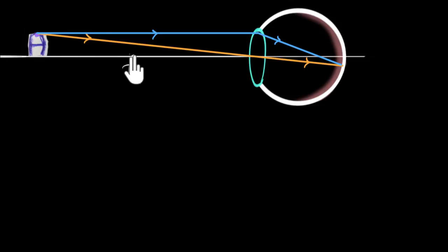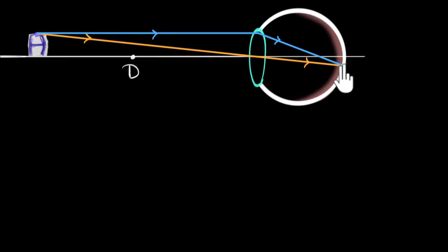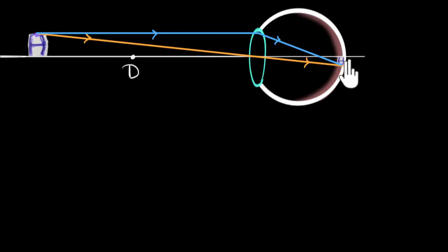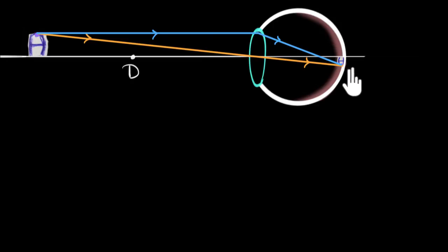This only works as long as the object is outside the near point. Notice this point is being focused, and similarly the point over here gets focused — we can now reconstruct the image. The image will look inverted. How big this object looks to us depends only on the height of the image formed in the retina. If this height increases, it'll look bigger to us; if it decreases, it'll look smaller.